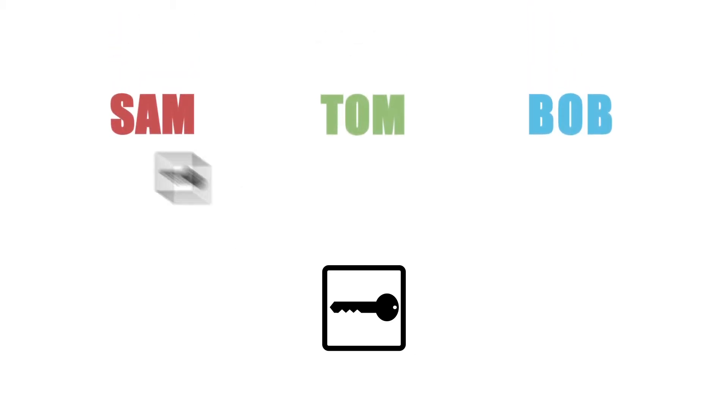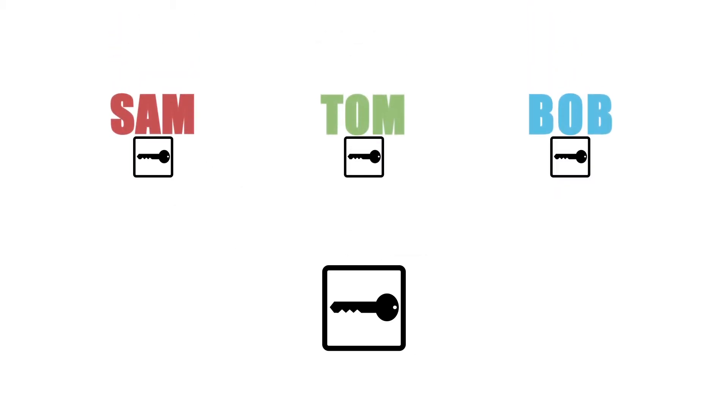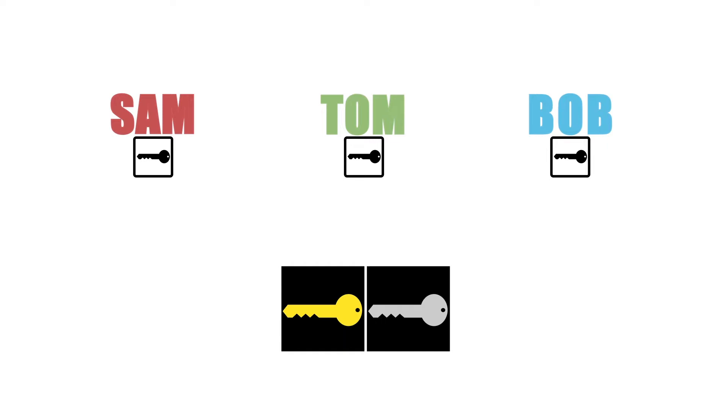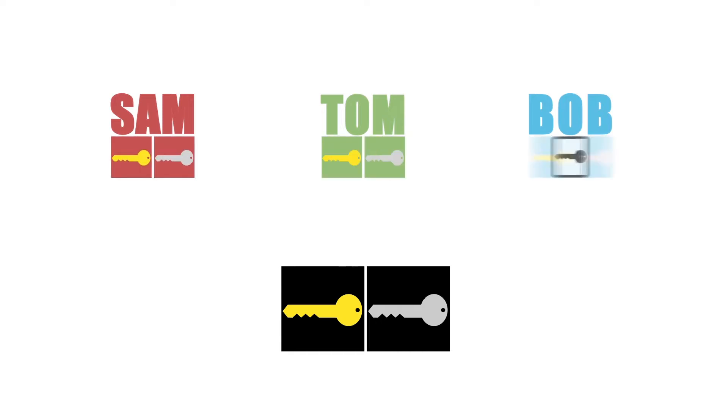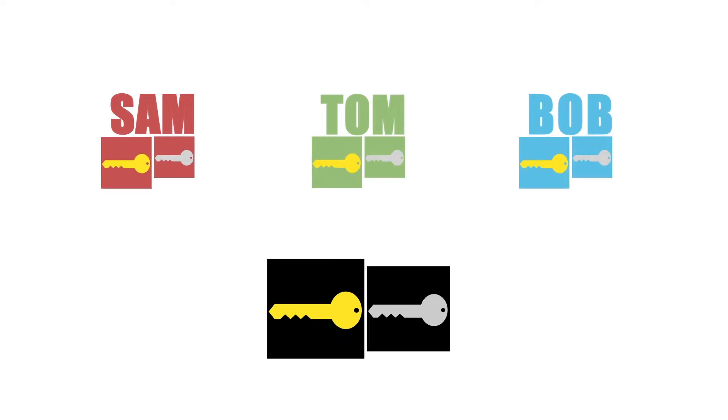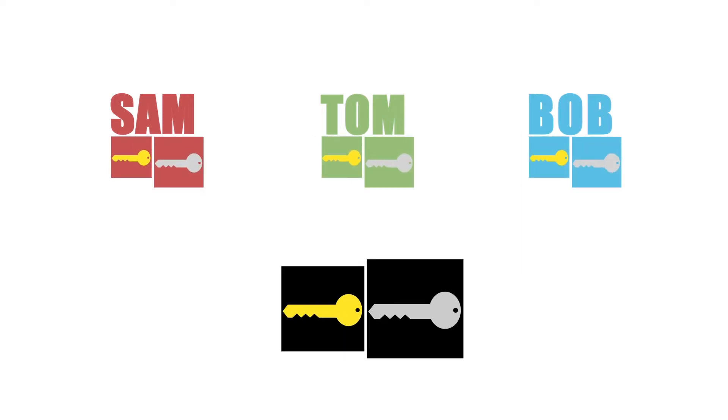Public key encryption, otherwise known as asymmetric encryption, was invented to address some of the problems with symmetric encryption. Public key encryption uses two keys — a key pair — one of them public and the other one secret.